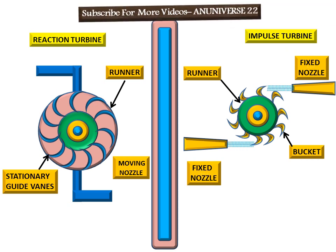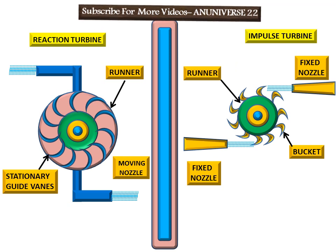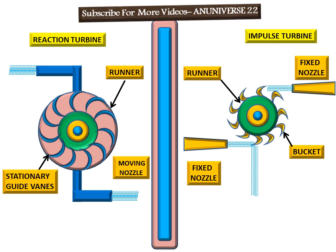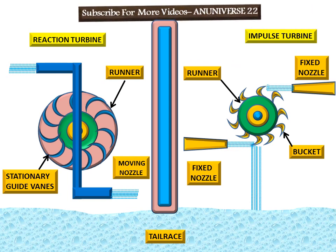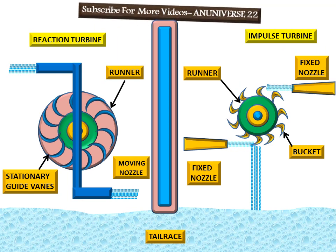Now we can see the path of water that strikes the buckets of the impulse turbine runner. This is the water coming out from the moving nozzle, and this is the water discharged after striking the bucket, flowing to the tail race. Water comes out from the fixed nozzle, strikes the bucket of the impulse turbine runner, and causes it to rotate.